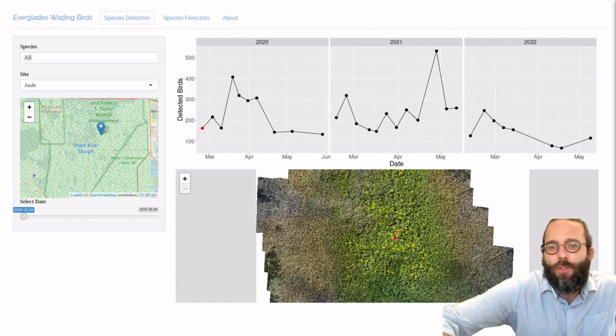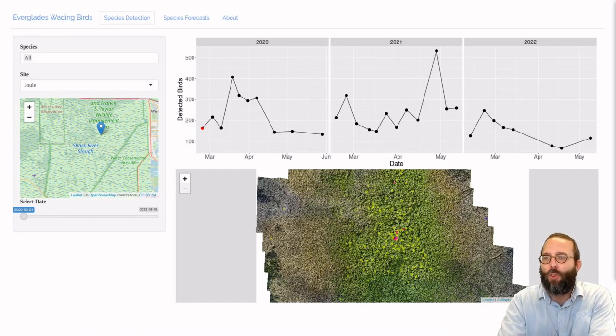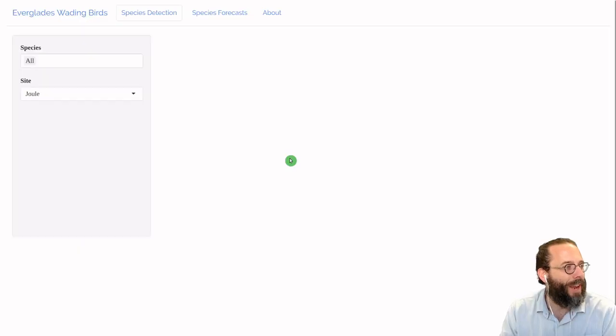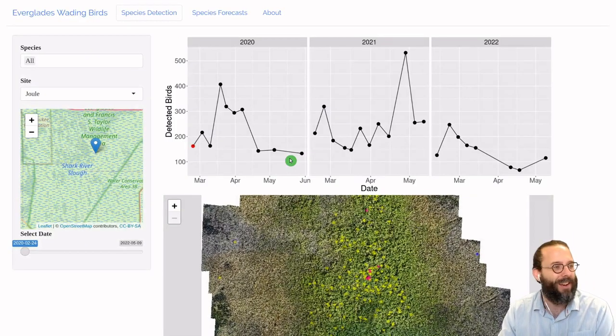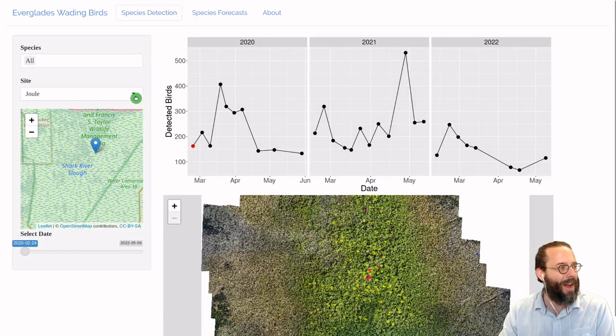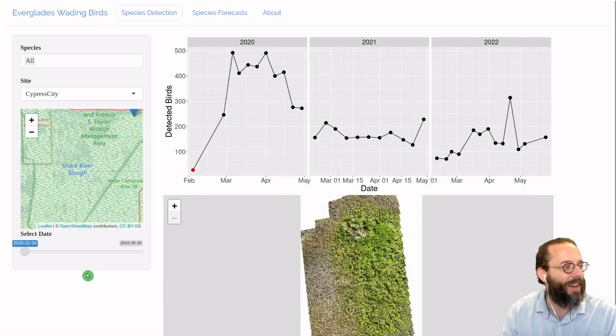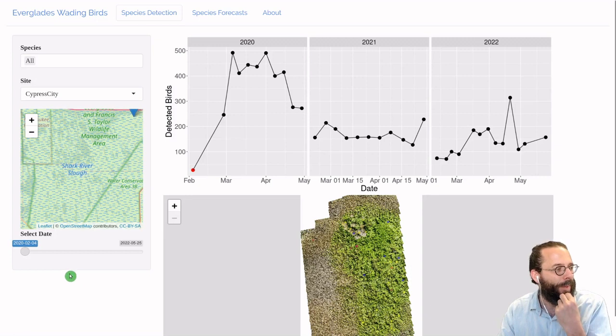And so the end result of this is that within about 24 hours of new data coming in from the field, we can have updated results on the web. And if everything goes well, we'll take a look at what that looks like. Okay, good. We're live on the internet here. Let's take Cypress City here as an example. So this is the last three years of data. The new season is just starting.